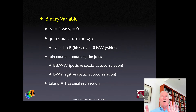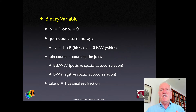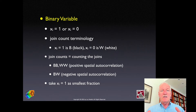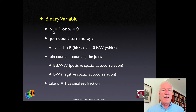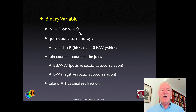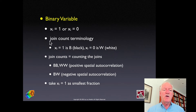Now we switch gears to the local joint count. In point pattern analysis, we only have the events — we don't have the non-events. Now we ask: what if we had the non-events? We have a lattice dataset where for each location we have either x at i equals one (event happened) or x at i equals zero (event did not happen). Cliff and Ord in their classic treatment of spatial autocorrelation advanced this notion of a join count — it's a count of joins.